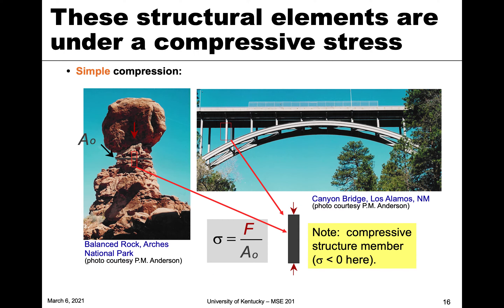For simple compression, if we look at a rock structure, the material in the middle has a huge force from a big boulder above it, and since it's not moving, there has to be an equal force below it. That's a classic example of compression — force over area, with the directionality moving towards the area. A column of a bridge is also under compressive force.